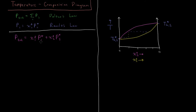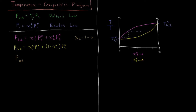For just two components in a binary mixture, χ2 is just 1 minus χ1, and vice versa. So we can substitute in and write the total pressure as χ1·P1* plus (1 minus χ1)·P2*. We can then factorize that into the convenient form: total pressure equals P2* minus χ1(liquid) times (P2* minus P1*).